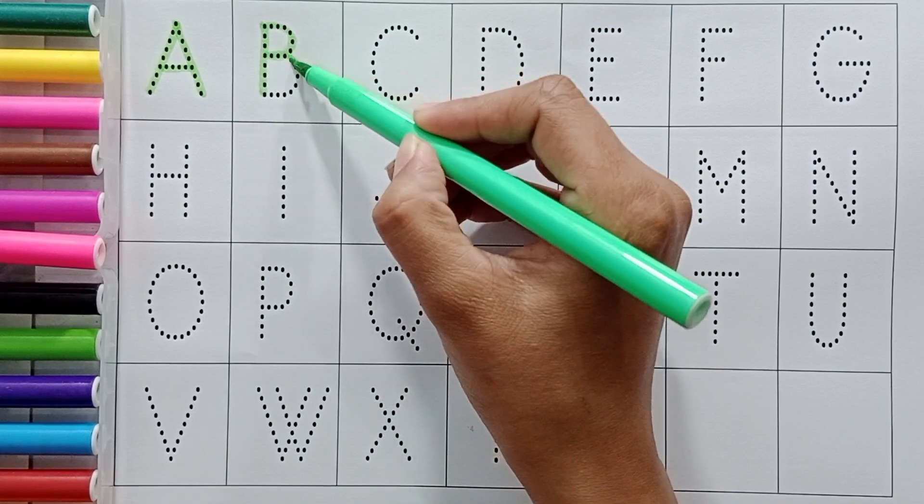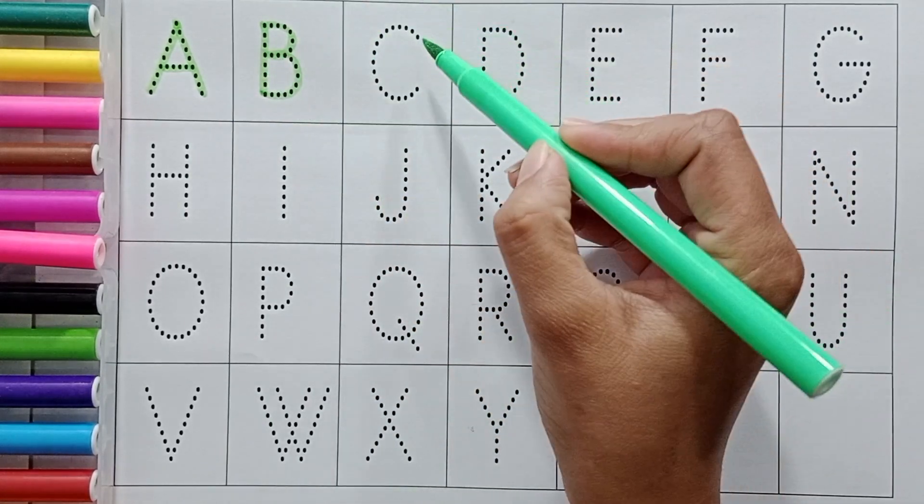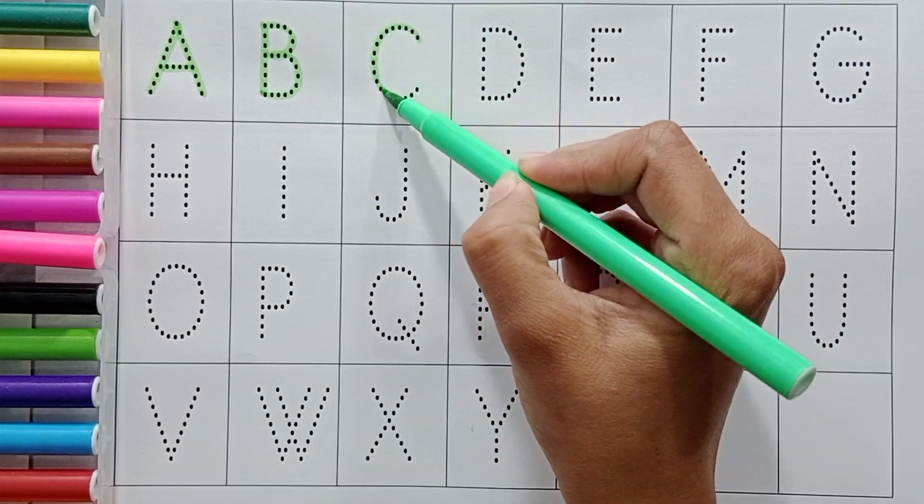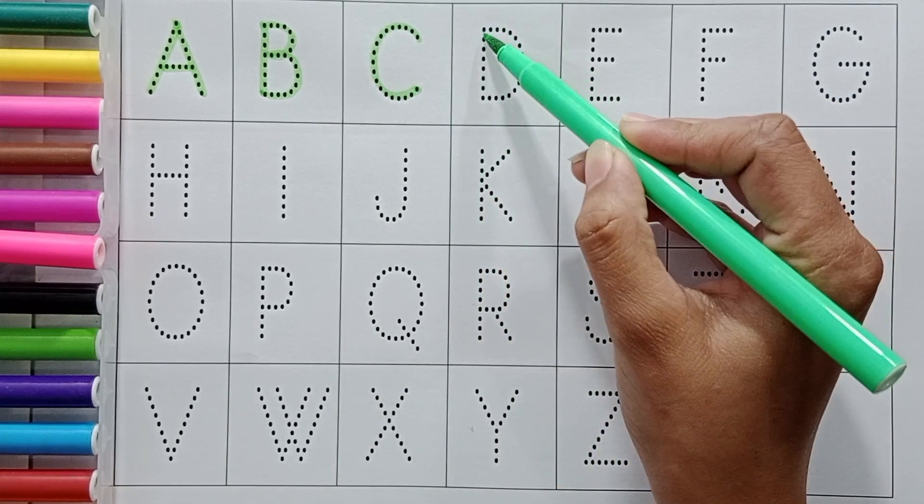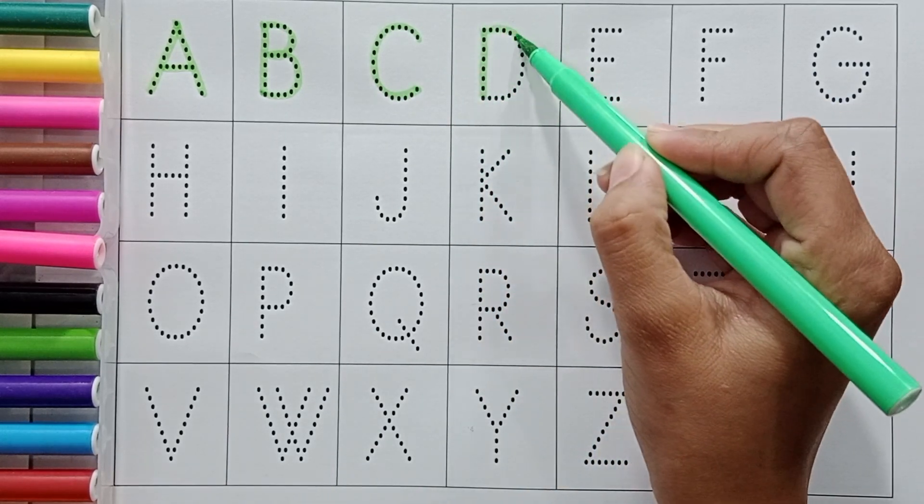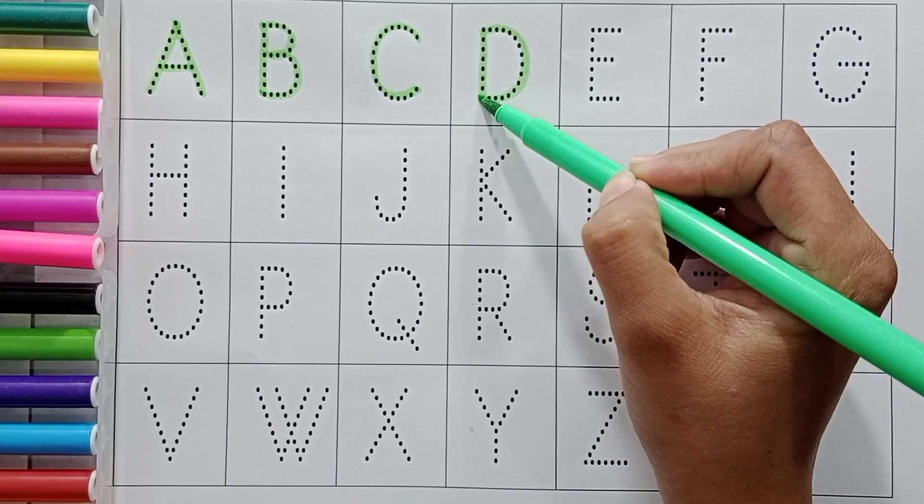B. B for ball, B for ball. C. C for cat, C for cat. D. D for doll, D for doll.